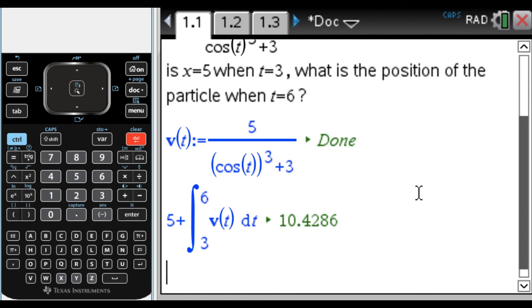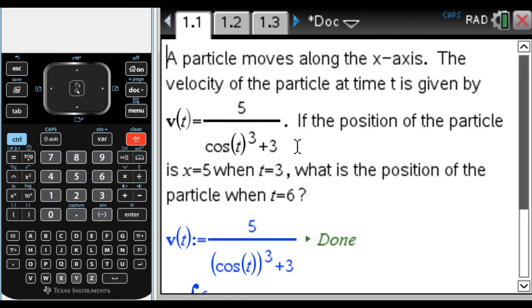This is a really good example of using the fundamental theorem with a velocity function to find your position at a particular time. Always be on the lookout for things that you can't actually find an antiderivative for, because they're just testing to see if you know how to use your calculator and the fundamental theorem at that point. I hope you found this helpful, and good luck.